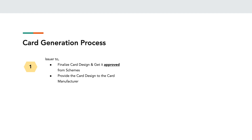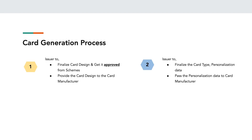Let's look at the card generation process and the various certification methods involved. The first step is that the issuer has to finalize the card design and get it approved by the schemes — adhering to the brand guidelines, finalizing the card design, and getting it approved. This is the first initial step of the certification process. The issuer then provides this card design to the card manufacturer, who takes the design and puts it on the plastic.